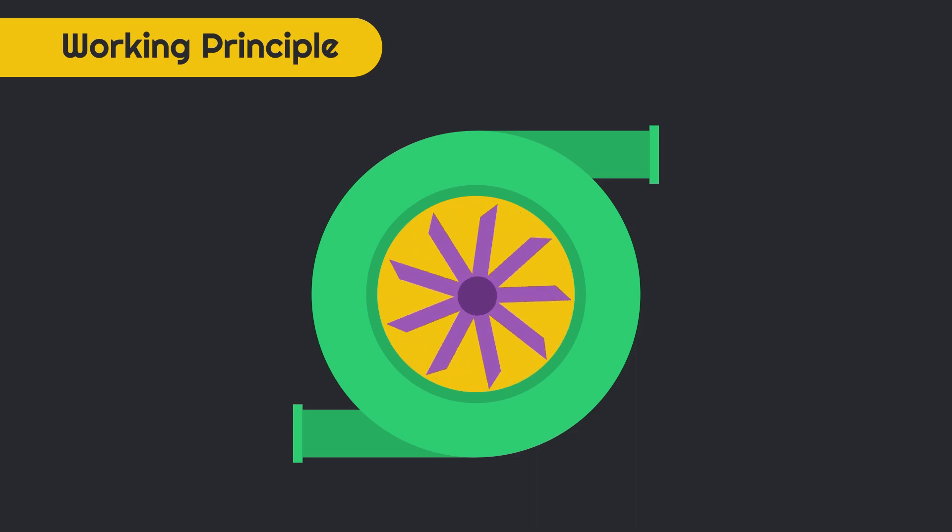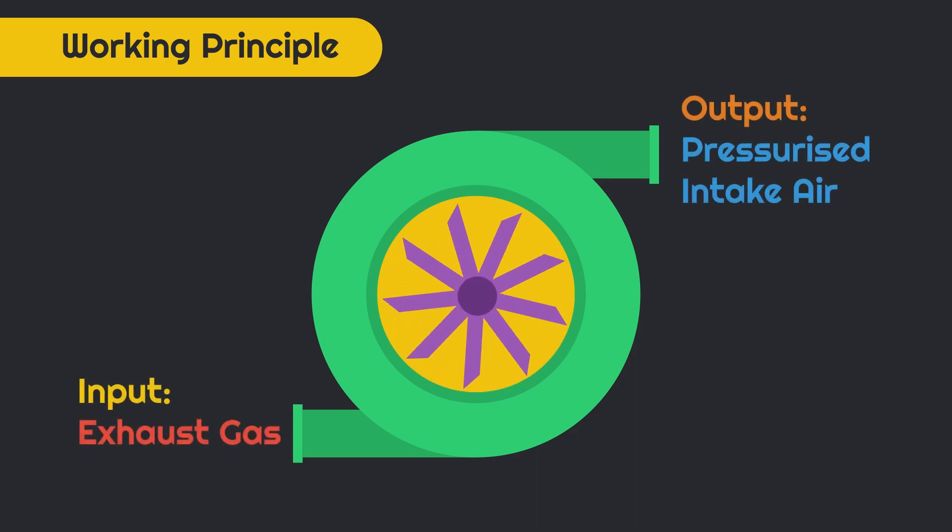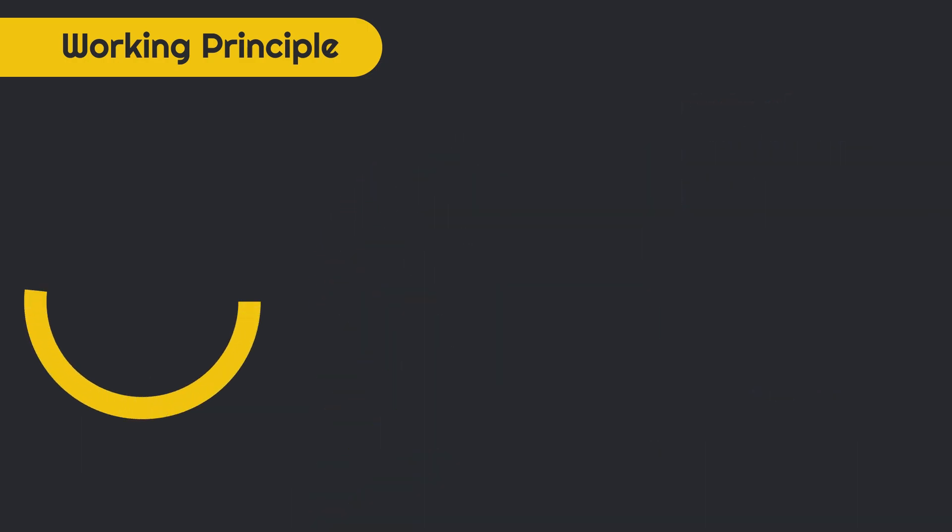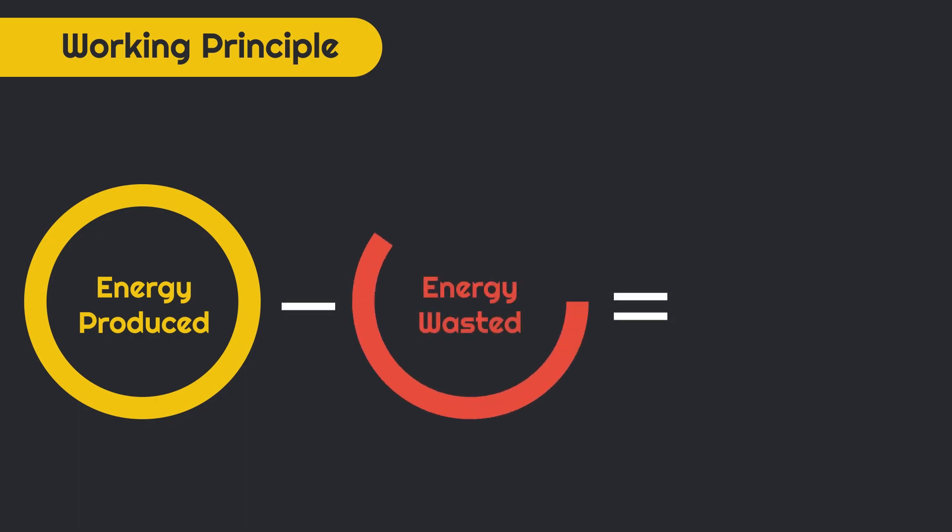Turbocharger works on a very straightforward principle in which it sends the energy releasing from the engine exhaust back to the engine itself. In general, the engine produces a net energy of 100%, from which some amount of energy is wasted while the rest is available at the output. In this case, turbocharger decreases the amount of energy wastage, which results in increased output and fuel efficiency.